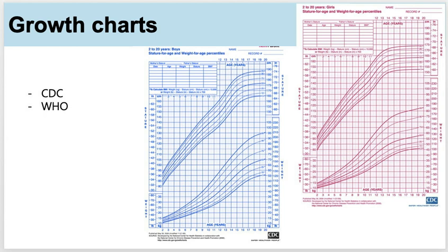There are two main growth charts, the ones made by the CDC or the Centers for Disease Control and Prevention, which are present in this slide. The other ones are from the World Health Organization, or WHO.